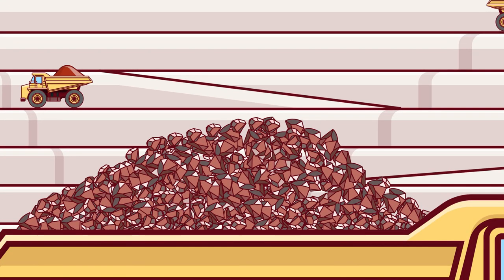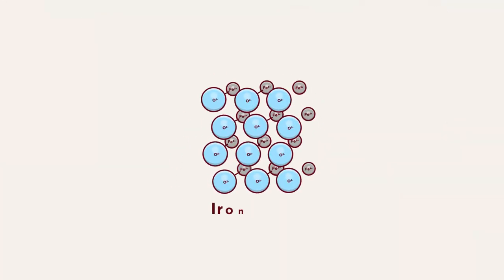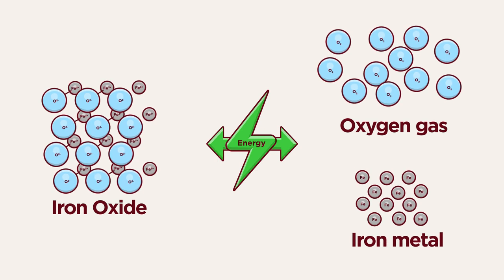Iron metal production is an energy intensive operation because it needs to separate iron and oxygen atoms tightly bounded in naturally occurring minerals.